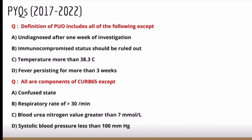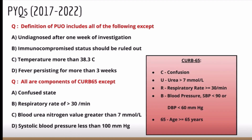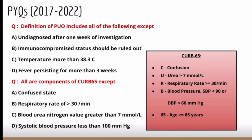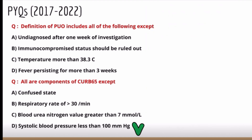The components of CURB-65 are: C for confusion, U for urea more than 7 mmol/L, R for respiratory rate more than 30, B for blood pressure — systolic less than 90, diastolic less than 60 (remember as 90/60) — and 65 for age more than or equal to 65 years. Looking at the options, systolic blood pressure less than 100 is wrong; it should be less than 90. That is the correct answer.